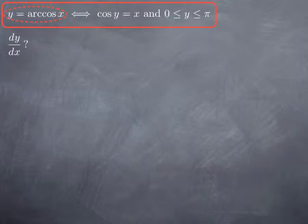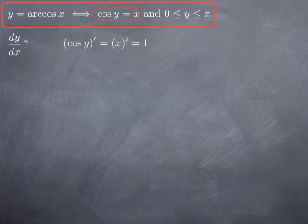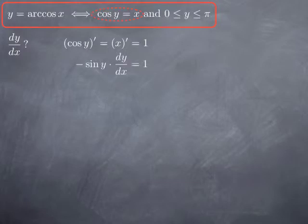Now, what about the derivative of the arccosine function? We're trying to differentiate y where y equals arccos(x). By definition, y equals arccos(x) means cosine of y equals x, with y between zero and pi. So we can differentiate both sides with respect to x: the derivative of cosine y with respect to x equals 1. Since y is a function of x, we use the chain rule, getting the derivative of cosine — which is negative sine — evaluated at y, multiplied by dy/dx. So we obtain: negative sine(y) times dy/dx equals 1, meaning dy/dx equals negative one over sine(y).